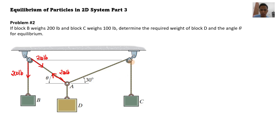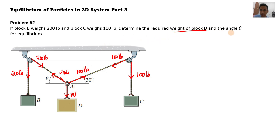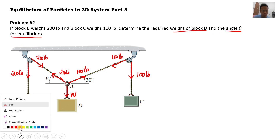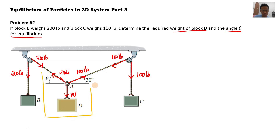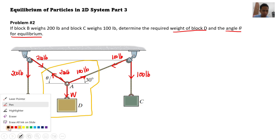For block C, its weight is 100 pounds downward. So this force is also 100 pounds here, and the force on the other side is also 100 pounds. The weight of block D is downward, so that is W. The required in the problem is the weight of block D and the angle theta for equilibrium, which we can solve by analyzing this force system.